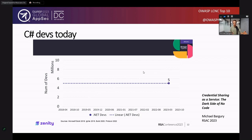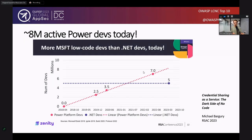On screen you can see the number 5 million — this is the number of .NET developers that are currently active today according to Microsoft. Compare that to the number of citizen developers building with Low-Code, No-Code: right now, according to Microsoft, there are about 8 million of those. Low-Code, No-Code expands the definition of what a developer is.